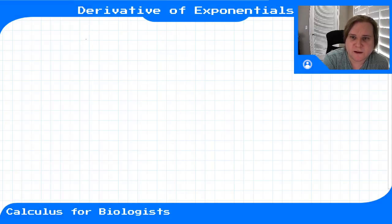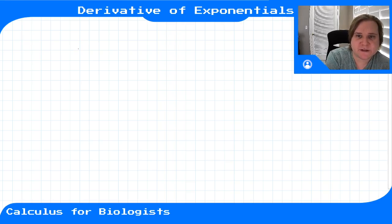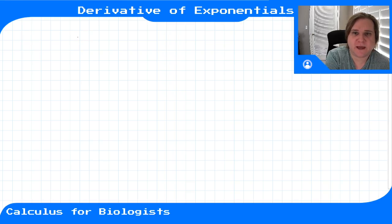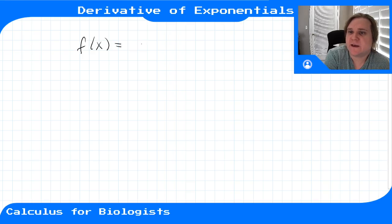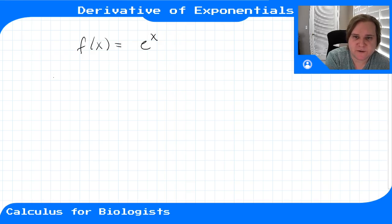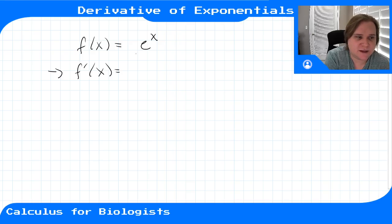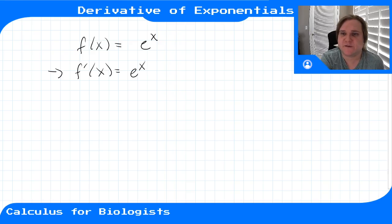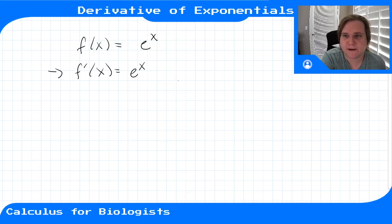Now that we've done a lot of complicated derivatives, we're going to take a step back and do the derivative of something easier. Let's take the exponential function f(x) = e^x. What we'll show in this video is that the derivative f'(x) is again e^x — a special function whose derivative is exactly the same as the original function. Let's show why this is the case.